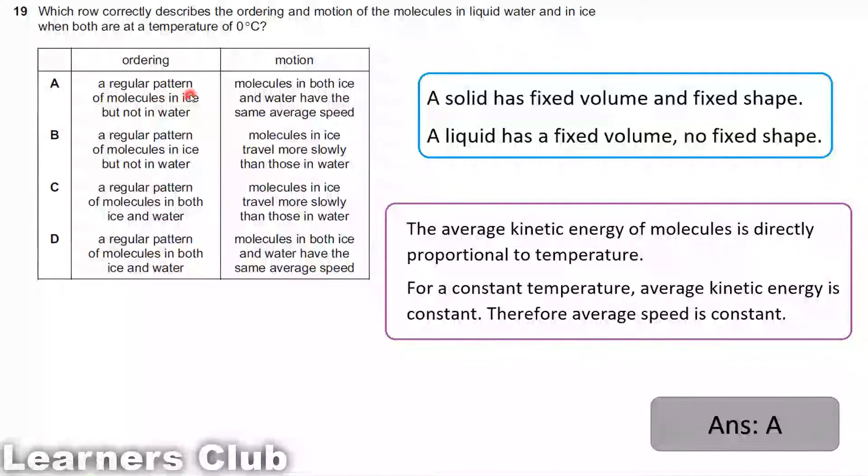From this you can read and find option A. A regular pattern of molecules in ice but not in water. Solid has a fixed shape, liquid has no fixed shape. Molecules in both ice and water have the same average speed. Why do they have the same average speed? Because their temperature is kept constant. Due to that, their average kinetic energy is kept constant. If their average kinetic energy is constant, that means their average speed is constant. The answer is option A.